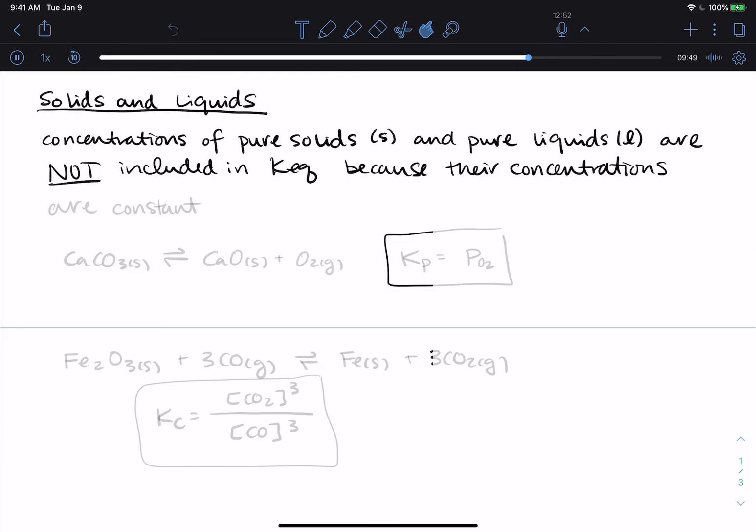They're not included in any KEQ expression because their concentrations are considered constant. Before reaching equilibrium and after reaching equilibrium, there's no change in the concentrations of a solid or a liquid. So they don't give us useful information about the balance of products and reactants. You will see some reading that builds up the KEQ expression as a law of mass action, and it will assign an activity to solids and liquids of one, which lets them drop out of the expression.